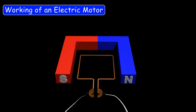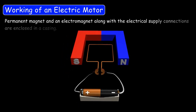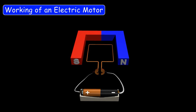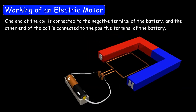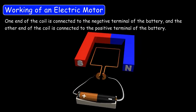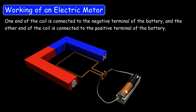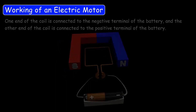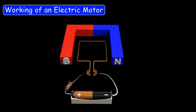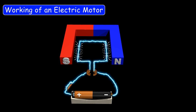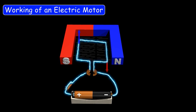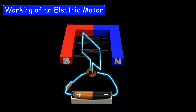Both the permanent magnet and the electromagnet, along with the electrical supply connections, are enclosed in a casing. One end of the coil is connected to the negative terminal of the battery, and the other end of the coil is connected to the positive terminal of the battery. When the electrical supply is on, current starts flowing in the coil from the positive terminal to the negative terminal of the battery.